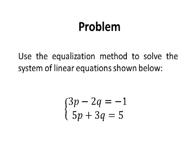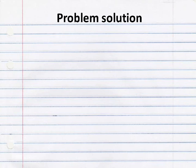Use the equalization method to solve the system of linear equations shown below. We have a system of two equations, two linear equations with the unknowns p and q. The first equation 3p minus 2q equals minus one, and the second equation 5p plus 3q equals 5.